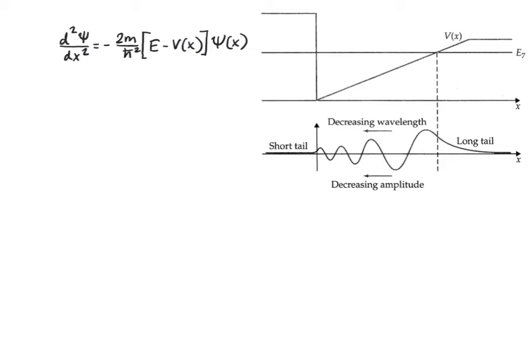Those are really all the rules you need to qualitatively construct solutions to the Schrödinger equation for any given potential. If you want actual values and need to do math with them, you'll need to solve the differential equation, which we will learn how to do. But often this qualitative approach is enough, especially at an introductory level.